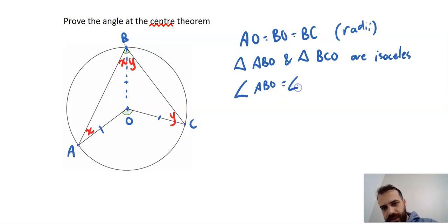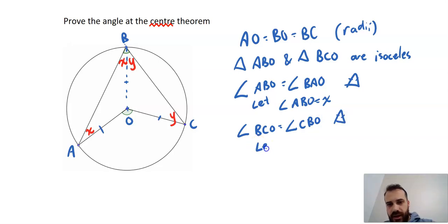So angle ABO equals angle BAO because of isosceles triangles. Let angle ABO equal X. Similarly, angle BCO equals angle CBO because of isosceles triangles, and I can let angle BCO equal Y.